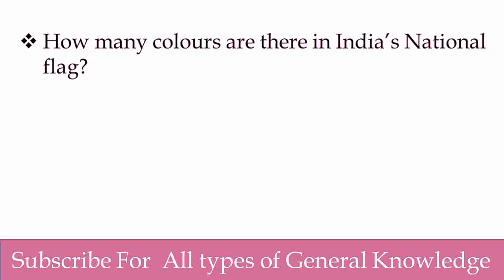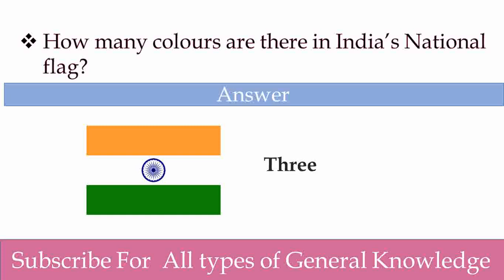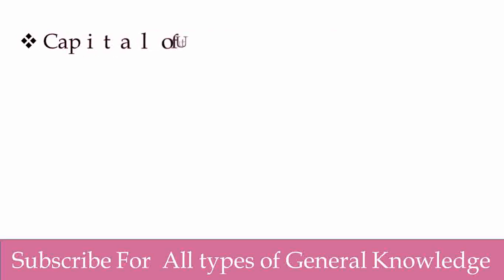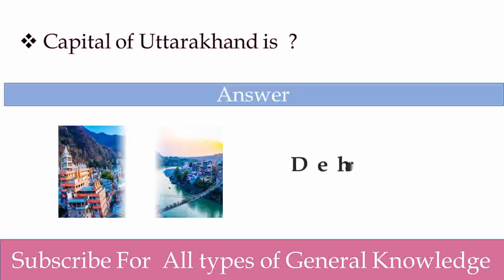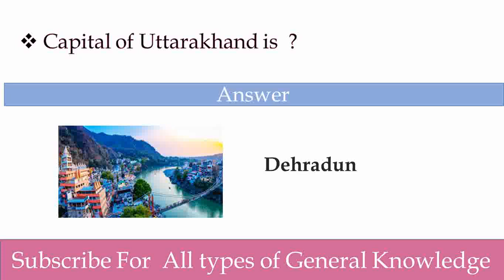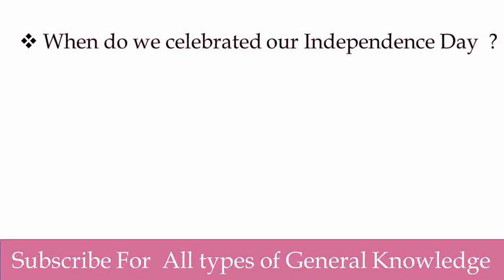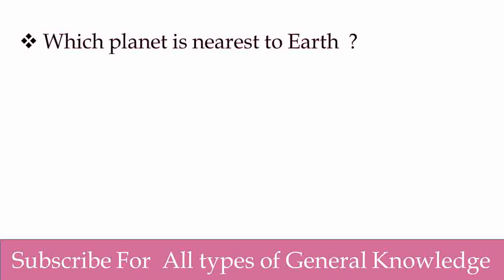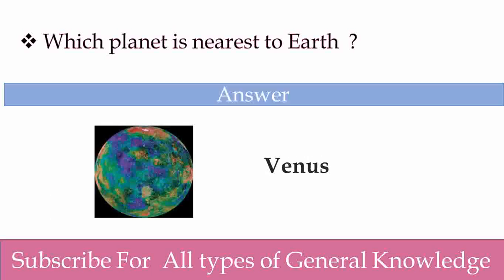How many colors are there in India's national flag? There are three colors. Yes, good. Gateway of India is located at? Mumbai. Good. Capital of Uttarakhand is? Dehradun. Yes, capital of Uttarakhand is Dehradun. When do we celebrate our Independence Day? 15th August is celebrated as our Independence Day. Very good, Abhibsha. Which planet is nearest to Earth? Venus is nearest to Earth. Good, very good.